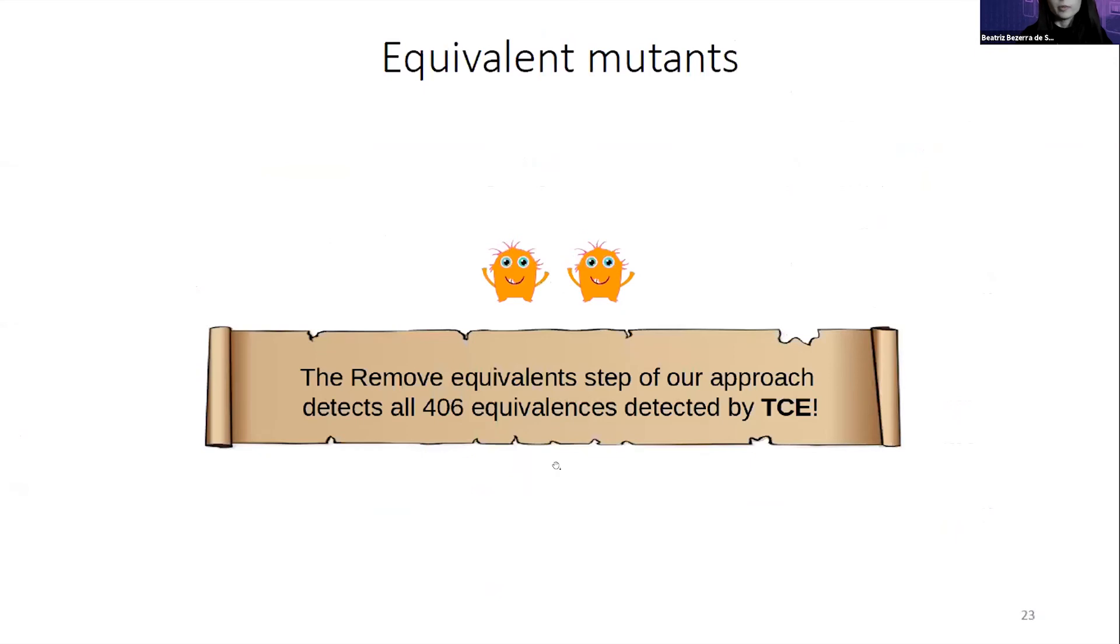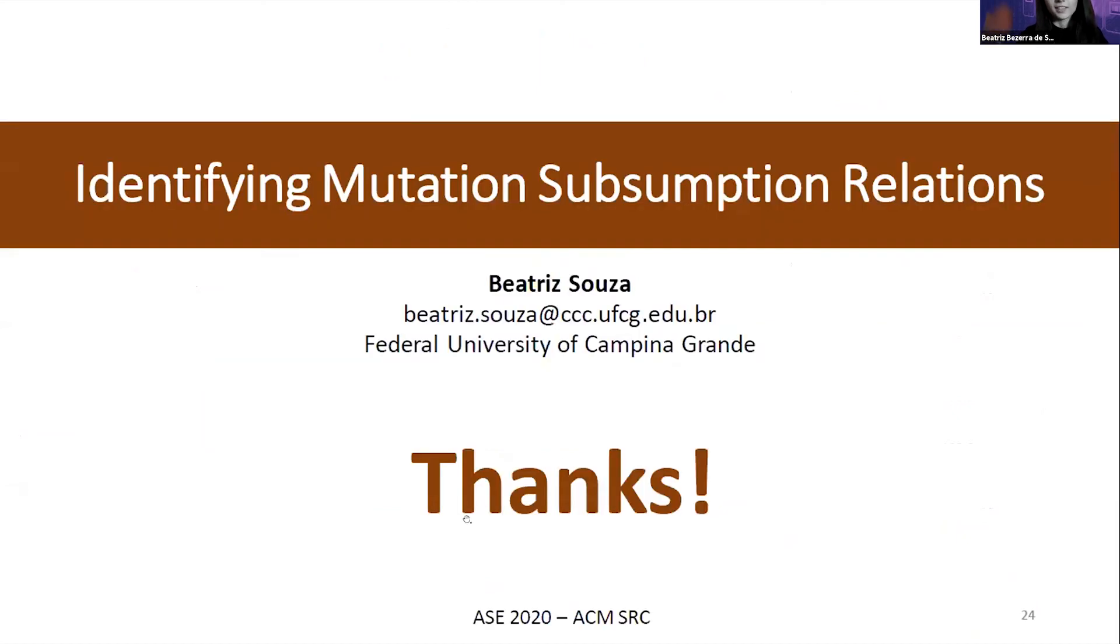Moreover, we compared equivalent mutants detected by TCA, which is a technique to identify equivalent mutants based on bytecode instrumentations, with equivalent mutants detected by our technique. And our technique detects all the equivalent mutants detected by TCA with less effort. So besides being valuable to identify redundant mutations, our technique also seems valuable to identify infeasible mutations. Thanks. I'm happy to take any questions that you may have.